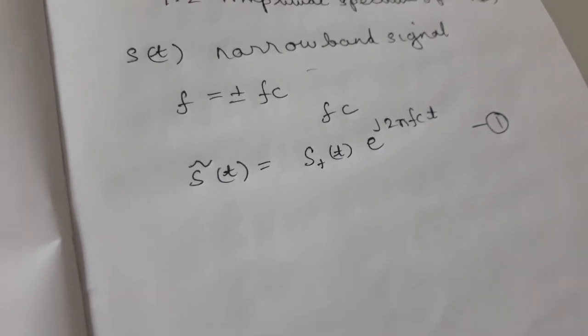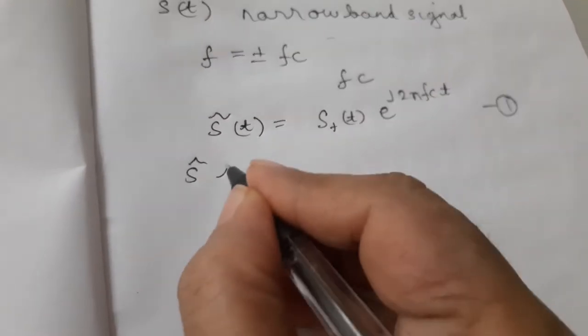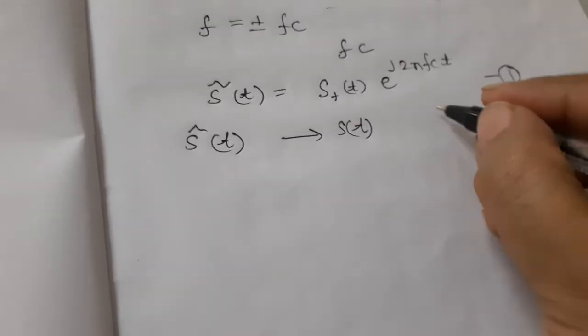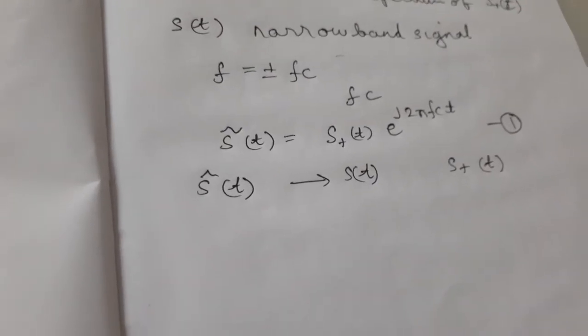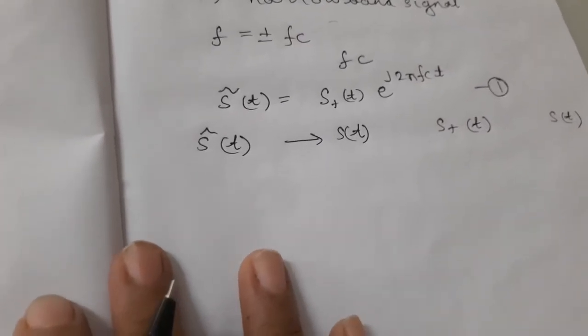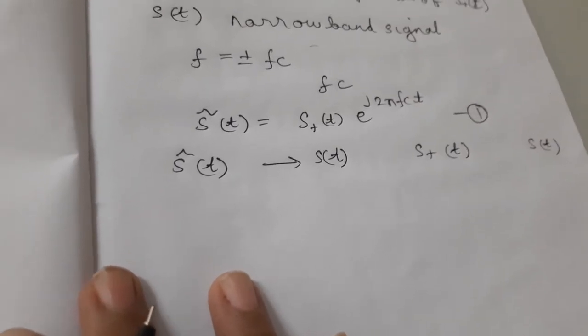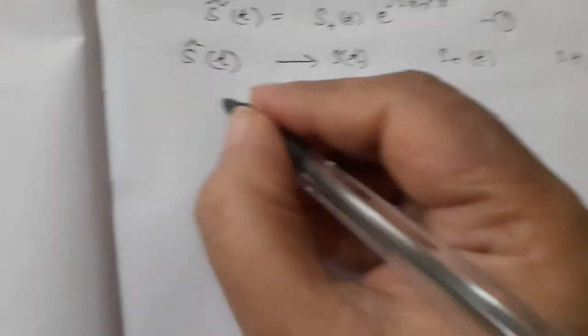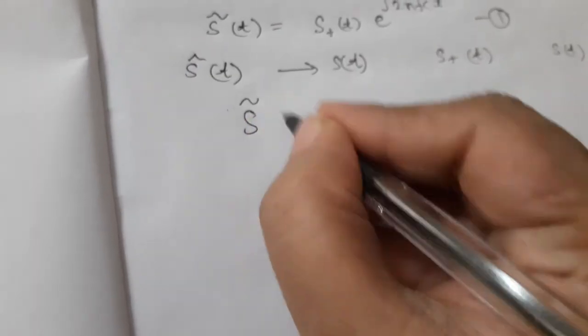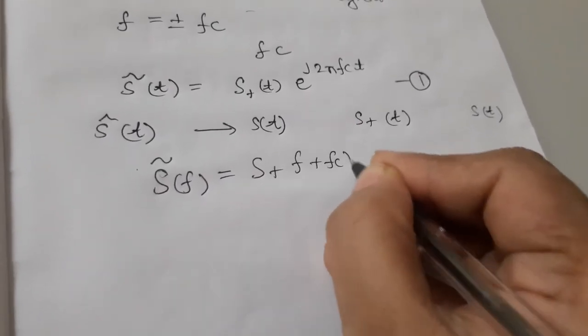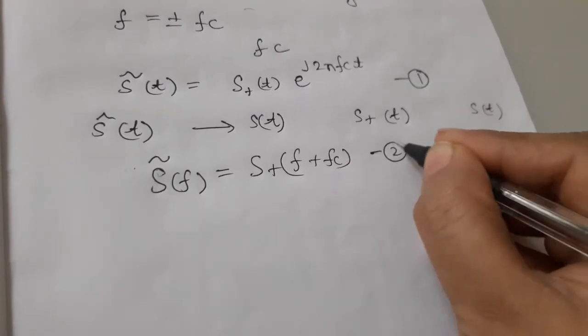Now, equation 1 relates to the complex envelope S tilde of t of band pass signal S of t, to the pre-envelope S plus of t of band pass signal S of t. Applying the frequency shift property to a Fourier transform to equation 1, we get the result given below. I'll write the result. This is capital S tilde F equal to S plus F plus fc. Let this be equation number 2.